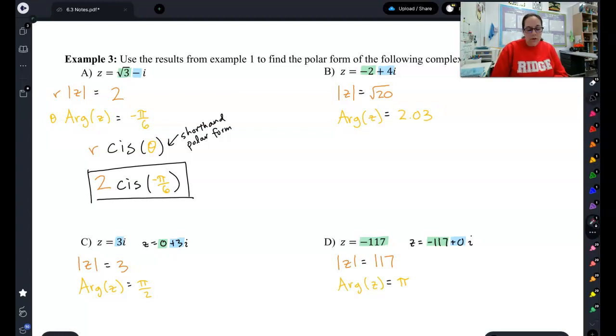So that's all you need to go from a plus bi to r cis theta. You just calculate the modulus like we did in the first video, calculate the principal argument like we did in the first video, with just a little reminder, a squared plus b squared for the modulus, and arctan of b over a for the argument.